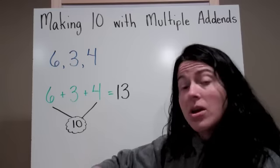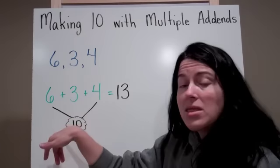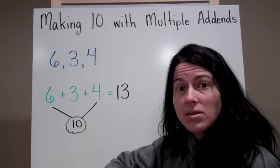And I can count up: 11, 12, 13. So by using that friendly 10, I am able to add 3 addends quite easily.